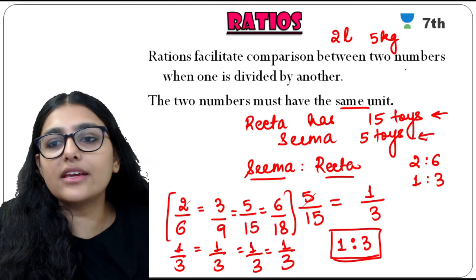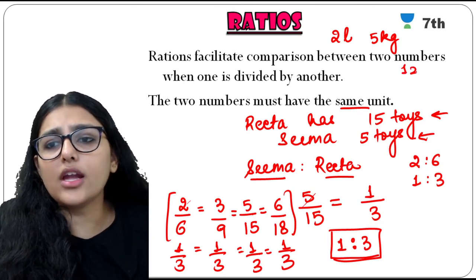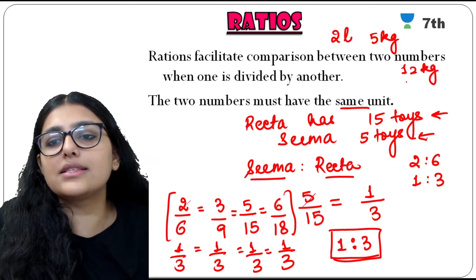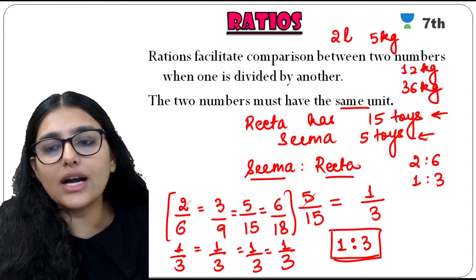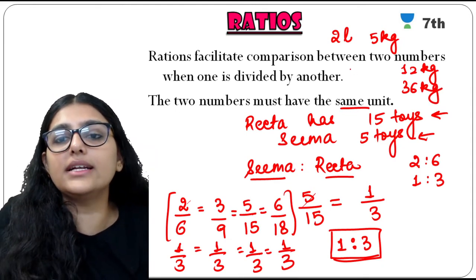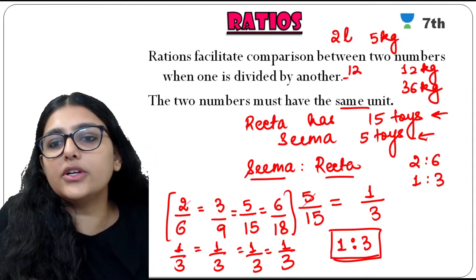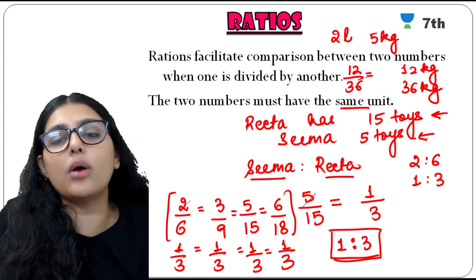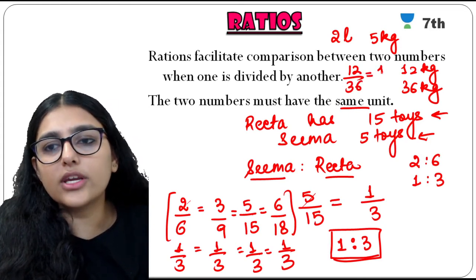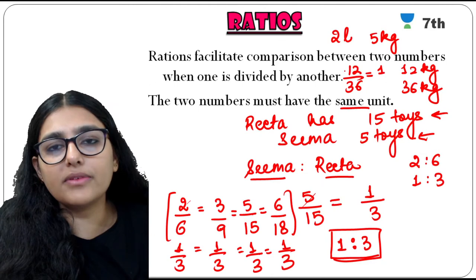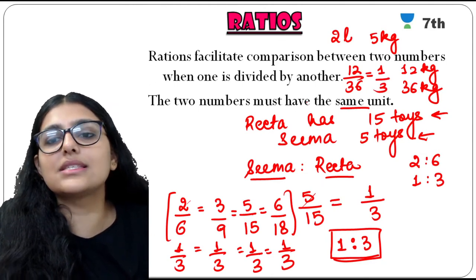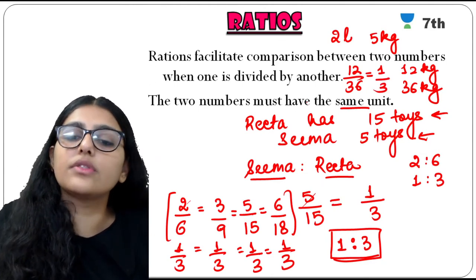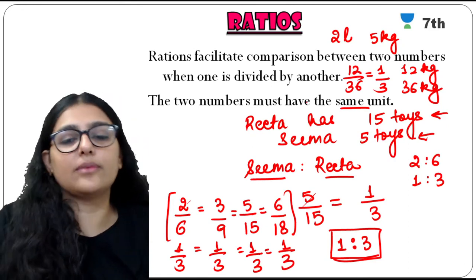However, I can find the ratio of 12 kg to 36 kg. I write it as 12/36 and cancel the common factor. 12 ones are 12 and 12 threes are 36, so the ratio is 1:3.